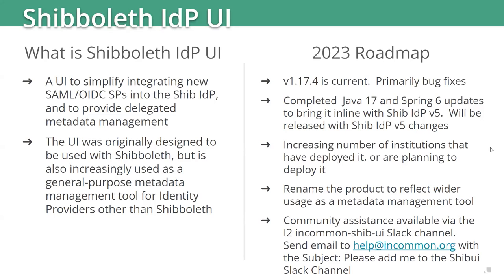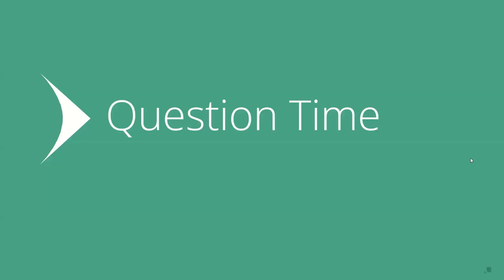Community assistance is available. To join the Slack channel for InCommon Shib IDP UI, send an email to help@incommon.org with the subject 'Please add me to the Shib UI Slack channel,' and community support is available there.